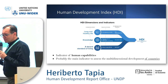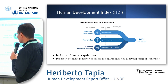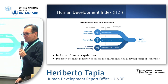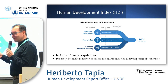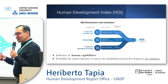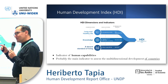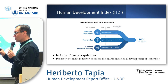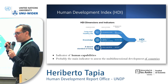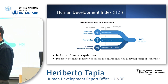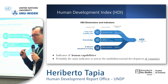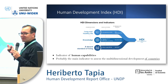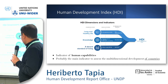Probably all of you are familiar with the Human Development Index, but I think it's important to remind you about what this is. It's a multidimensional indicator of capabilities. It captures health measures using life expectancy at birth, education using expected years of schooling for children, mean years of schooling for adults, and the standard of living captured using GNI per capita. This is probably the main indicator to assess multidimensional development that we have.